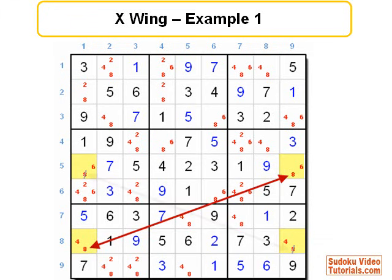So, in either case, you'll end up with 8s in opposite corners. Now, we don't know which diagonal the 8s will lie on, but we do know that 8s will be in opposite corners. And one of the 8s will be in column 1 and the other will be in column 9.